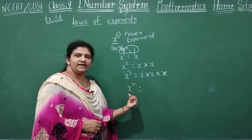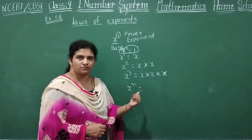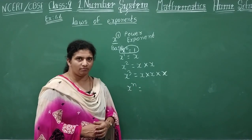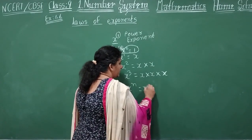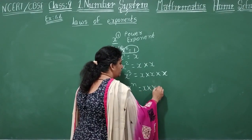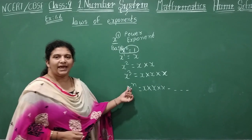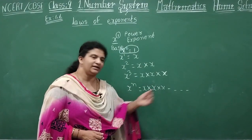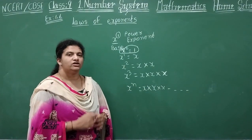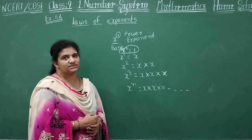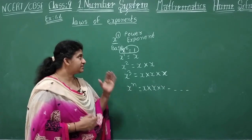So X is the base and n is your power or exponent. X multiplied into X into X and so on, up to n times — if you know the n value, that many times it is multiplied. So now your next step.